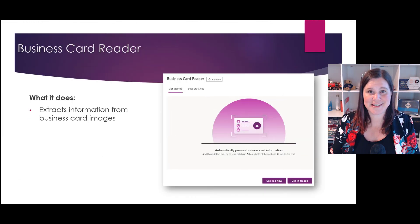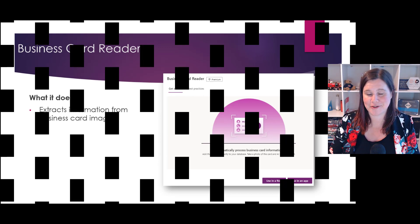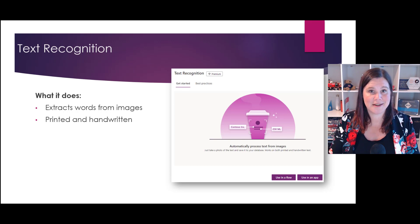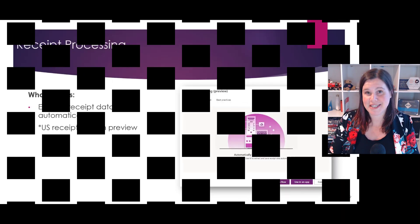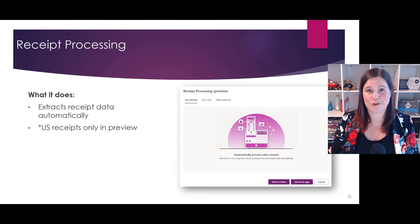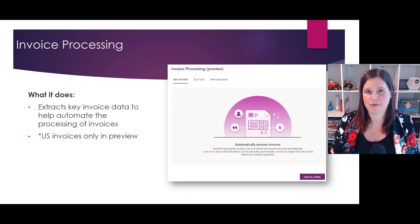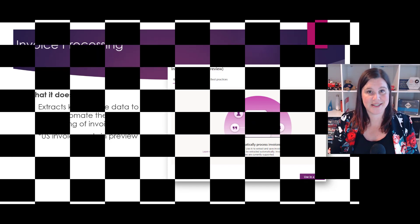The business card reader reads a business card and extracts the information from it, which you can put into your CRM system or wherever else you need it. Text recognition will recognize text in images, so if you want to take a photo of something and get the text read from it, that's what this one does. There's also a receipt processing model that pulls all the information from a receipt — you can use this to create expense apps — and similarly an invoice processing model. These are pre-built and ready to go for receipts and invoices.